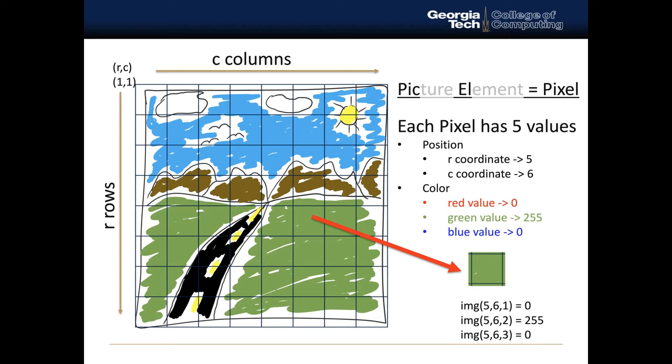If we take a look at the image that we have here and we wanted to represent one of these green pixels, we would have first a component for the red value. The red value is going to be represented with the R coordinate and C coordinate. So that's going to be 5 for R and 6 for C. And then we have the red value. In this case, we'll have a 1, and that is going to equal to 0.